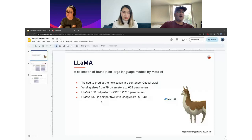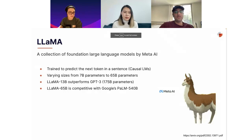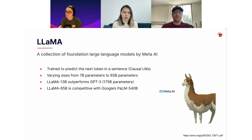For today's demo, we're going to be fine-tuning LLaMA using the Alpaca dataset. LLaMA is a collection of foundation LLMs that Meta AI released in February this year. They come in a variety of sizes from 7 billion parameters to 65 billion parameters, making them significantly smaller than models like ChatGPT, which are in the 175 billion to 300 billion parameter range. What's really cool about LLaMA is that in terms of performance, they're very close to ChatGPT-style models. This is the base model we'll be using for fine-tuning.